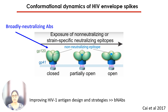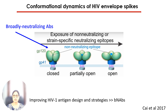Major efforts in the vaccine field are being invested in improving HIV envelope antigen design and strategies that can stimulate the production of broadly neutralizing antibodies. Several approaches such as trimer mimics and virus-like particles have been explored, but eliciting broadly neutralizing antibodies via vaccination has thus far proven difficult.